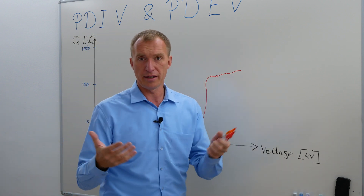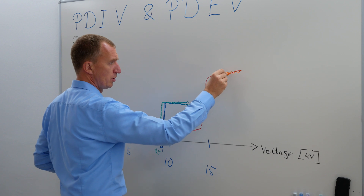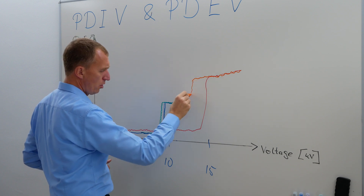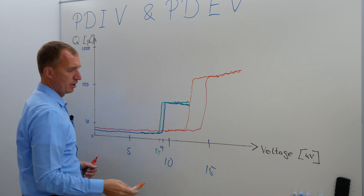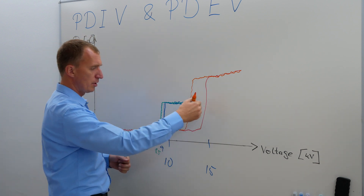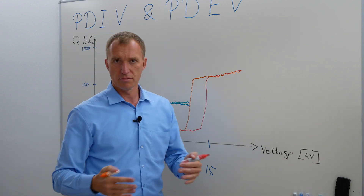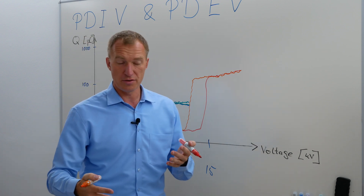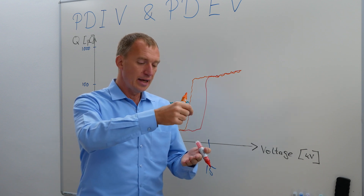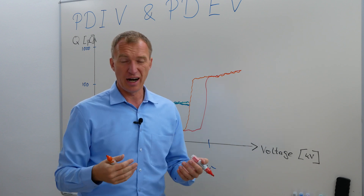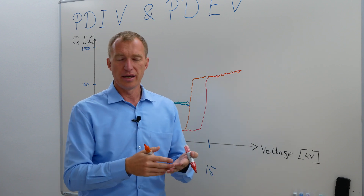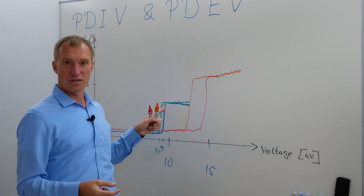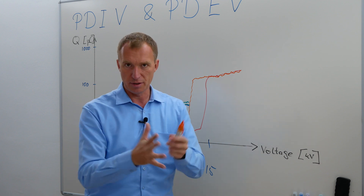Now to find the extinction voltage, you reduce the voltage again, observe some slight changes, and realize that the hysteresis — the difference between inception and extinction voltage on a surface discharge — is much bigger than for corona. Importantly, depending on the material the surface discharge is on, it can destroy and even carbonate the material quite fast. So if you play this game for a longer time, your inception voltage might get smaller and smaller as the material degrades.